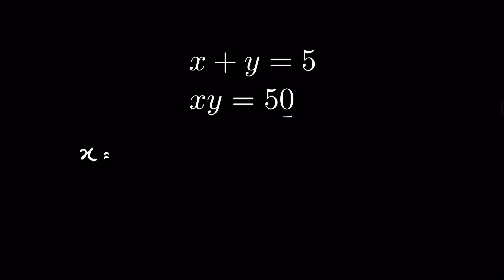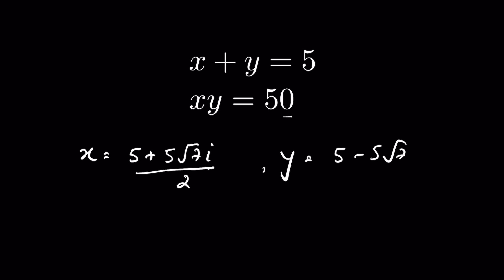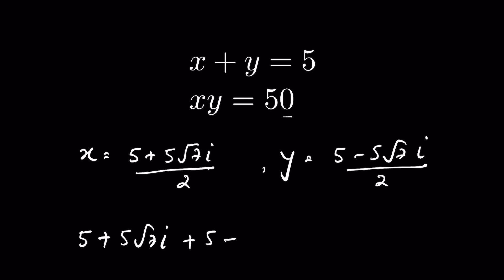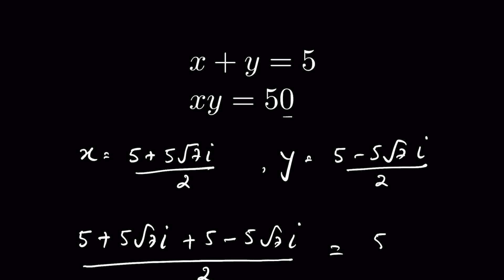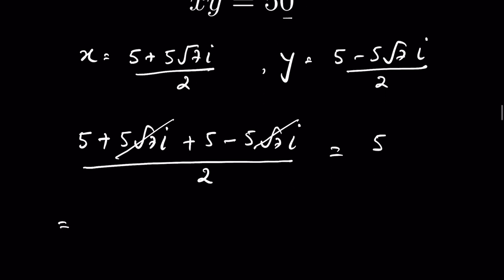Now let's verify these answers. When x is (5 plus 5√7i)/2 and y is (5 minus 5√7i)/2, their sum should equal 5. The plus and minus square root of 7i terms cancel, leaving 5 plus 5 over 2, which is 10 over 2, equals 5. So LHS equals RHS.